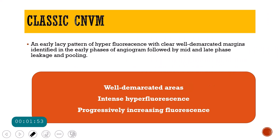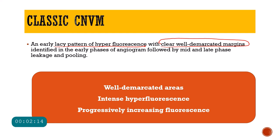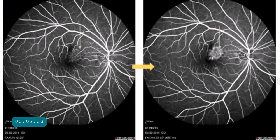Coming to the classic CNVM on fundus fluorescent angiography: you will see an early pattern of hyperfluorescence with a lacy pattern that has clear, well-demarcated margins. This is seen in the early phase of the angiogram. In the mid and late phases there will be leakage and pooling, resulting in well-demarcated areas of intense and progressively increasing hyperfluorescence. Initially the borders are well-defined, but because of leakage these borders become fuzzy in the later phases.